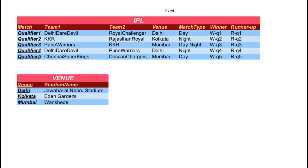So what I did is separate out the location and stadium name into a new table called venue. Now we can easily refer to the stadium name from the venue in the IPL table. We need to join these two tables to extract the whole information.